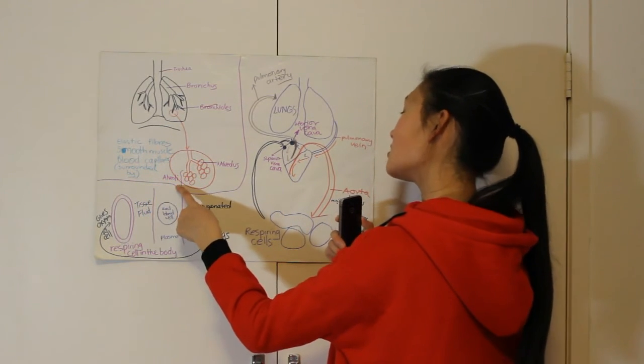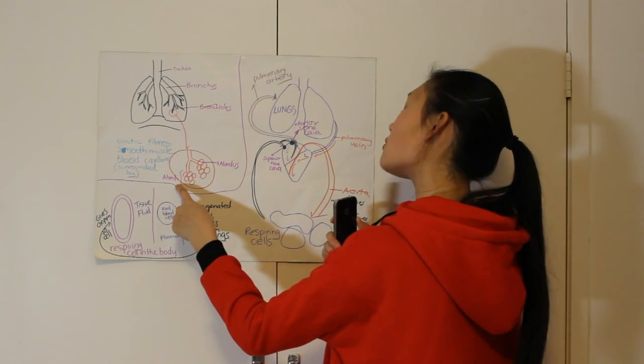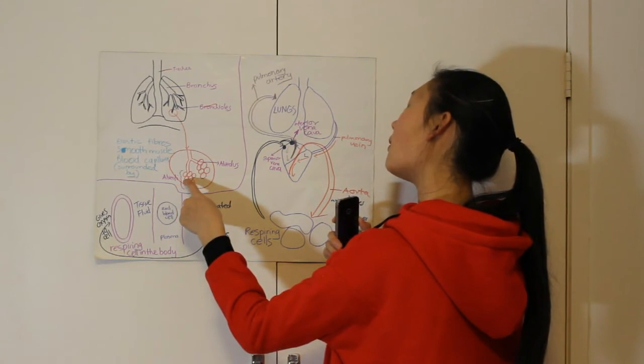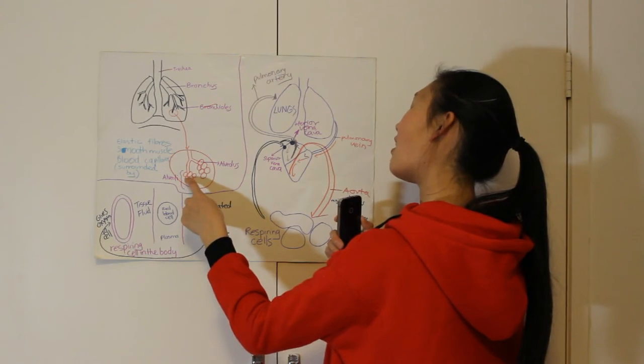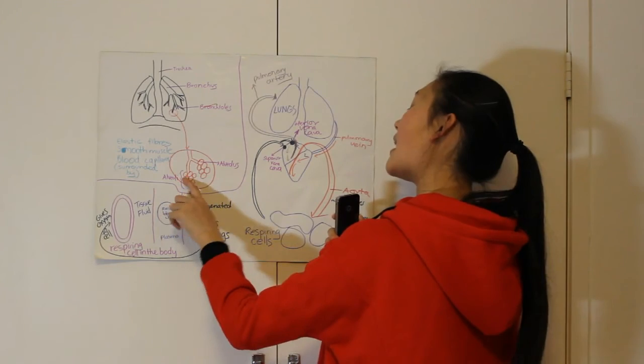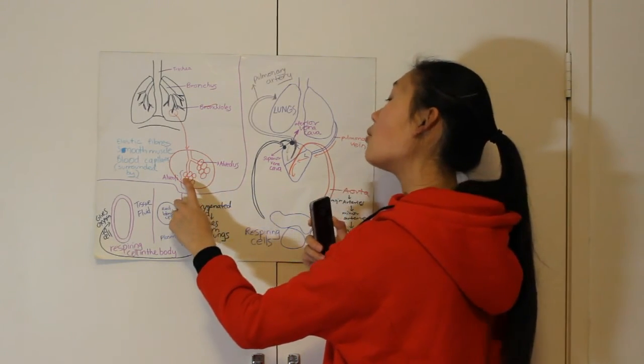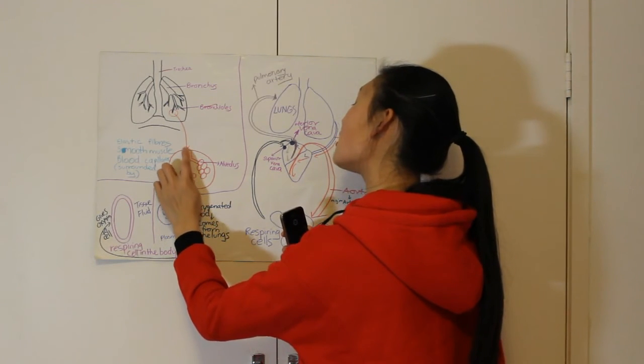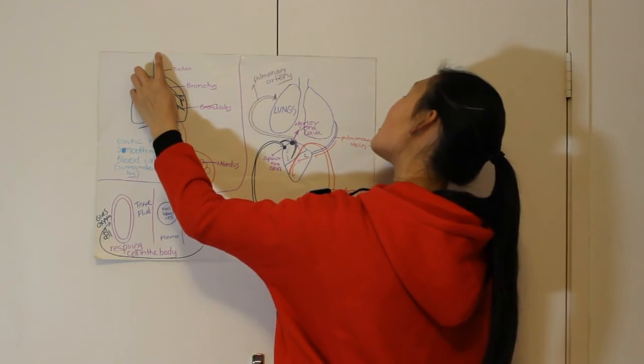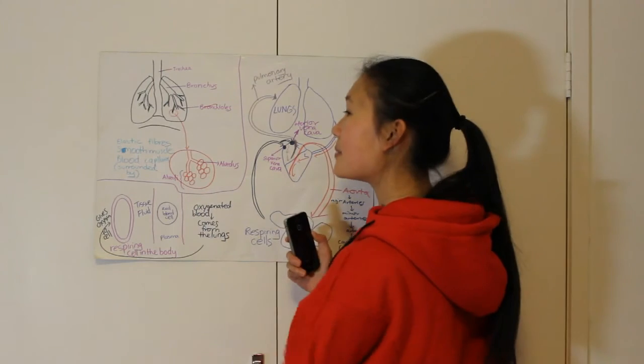The deoxygenated blood comes down over here. The carbon dioxide will be excreted, will diffuse through the capillary wall and through the alveoli wall and into the air of this air sac called the alveoli. And then the air filled with carbon dioxide will be taken out through the trachea again and then breathed out and respired by us.